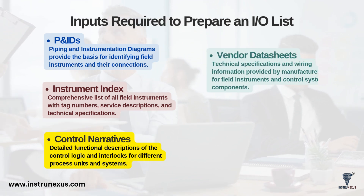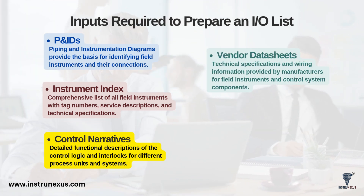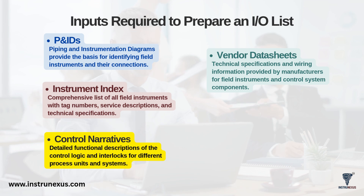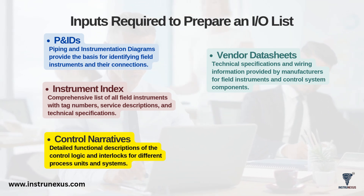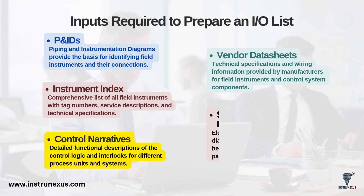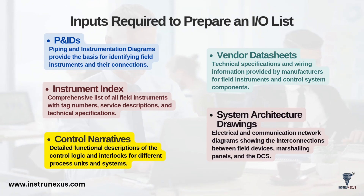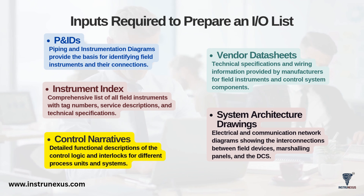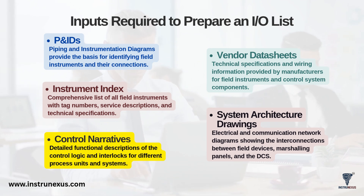Fourth, vendor data sheets: the technical manuals from manufacturers that provide specific wiring information and signal specifications for instruments. And fifth, system architecture drawings – diagrams that show the network and electrical connections between field devices, panels, and the DCS, helping you map everything to a physical location.